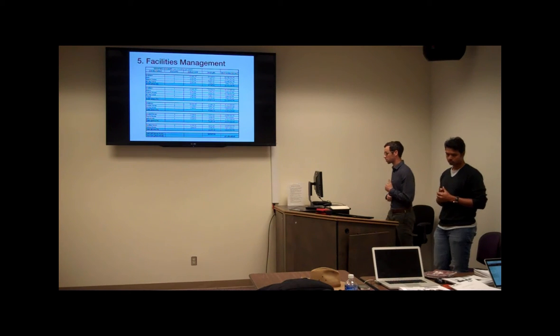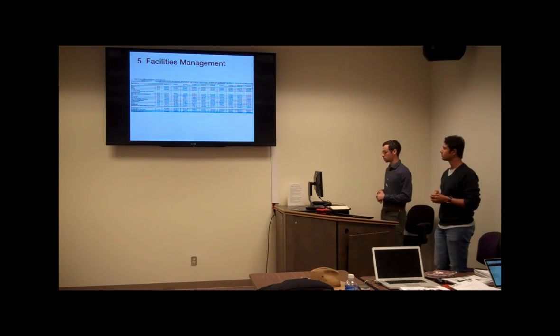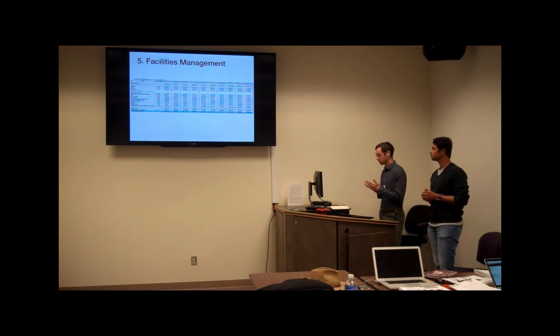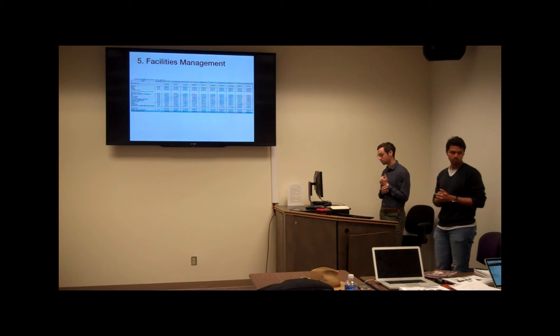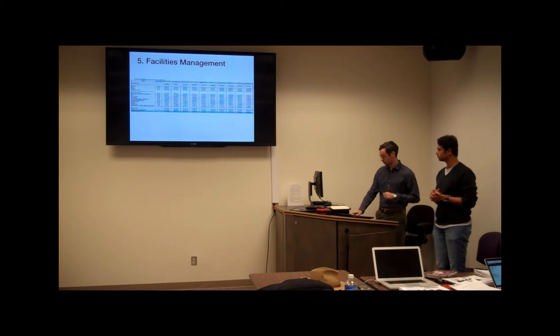For facilities management, the cost of buildings per phase we've already covered. For operating expenses and facilities management, for year one we have an operating budget per month of $154,000. By year 10, we will have $550,000 per month operating costs.